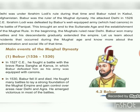Delhi was under Ibrahim Lodi's rule during that time, and Babar ruled in Kabul, Afghanistan. Babar was the ruler of the Mughal dynasty. He attacked Delhi in 1526 CE. Ibrahim Lodi was defeated by Babar's well-equipped army, which had cannons, in the Battle of Panipat. This brought an end to the Sultanate Age and the establishment of Mughal rule.